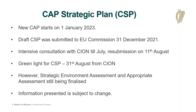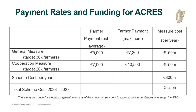However, the strategic environment assessment and appropriate assessment are still being finalised, so information presented in this webinar may be subject to some slight change. In terms of the payment rates, ACRES is a flagship scheme with a very significant budget of €1.5 billion available over the next five years — a significant increase on what was previously available for GLAS. For the general element of ACRES, we have a target of 30,000 farmers with an average payment of €5,000 and up to a maximum of €7,300 per farmer. The cooperation element targets 20,000 farmers with an average payment of about €7,000 rising to a max of about €10,500.